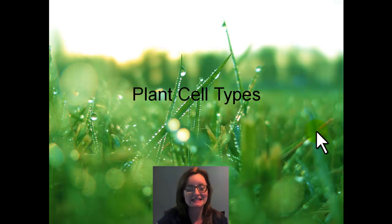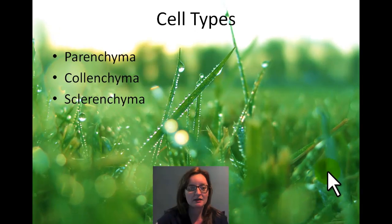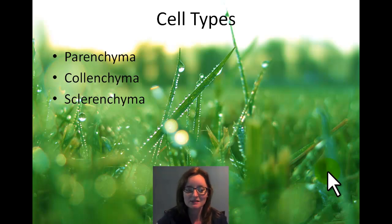Today we're going to talk about plant cell types, and there are three main types: parenchyma, colenchyma, and sclerenchyma. Those words are quite large and may sound unfamiliar, so let's figure out what they are.